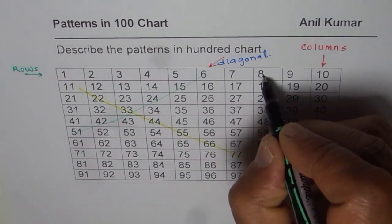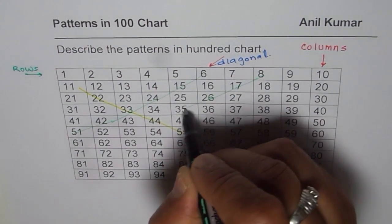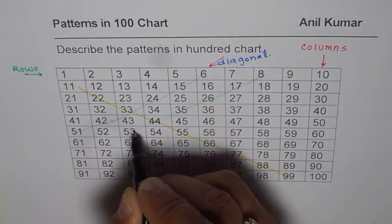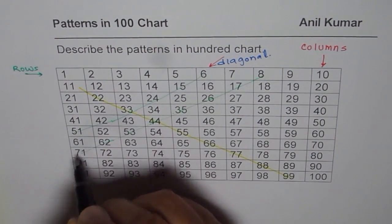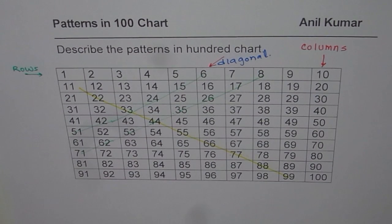You can try it with any other diagonal. Starting with 8, for example: 6+2=8, 3+5=8, 4+4=8, 5+3=8, 6+2=8, 7+1=8. So when you move left and down, the pattern is that the sum of digits is the same. You can pause the video and copy this: sum of digits remains the same if you move left and down along a diagonal.